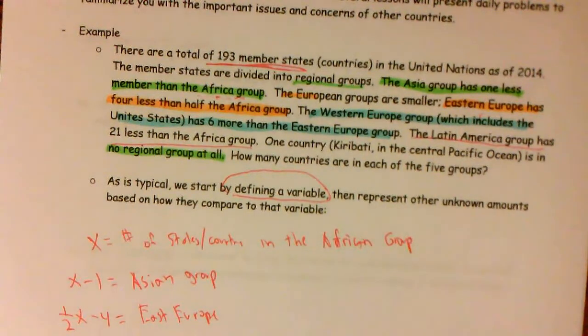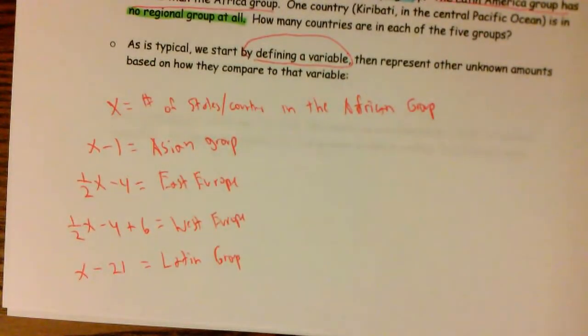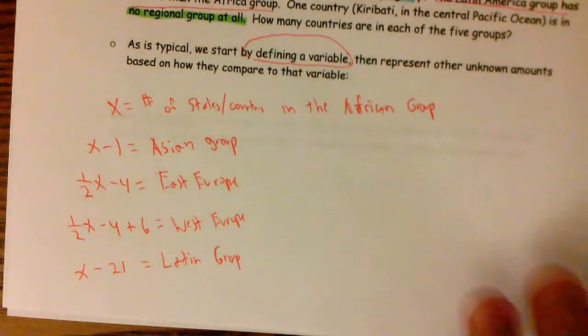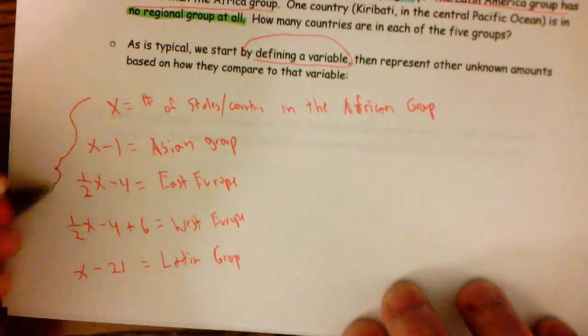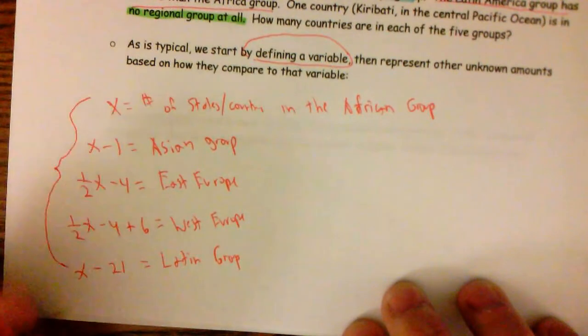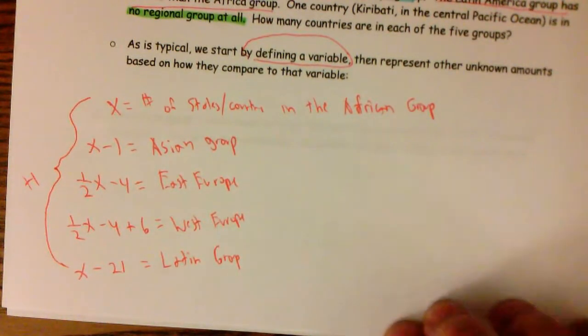Okay. So we have now represented everybody, or all of the groups that are in the UN. And it told me at the beginning that there's 193 states. So all of these added together, plus one because there's one country that's not in any group, would need to equal the total number in the UN, which is 193.